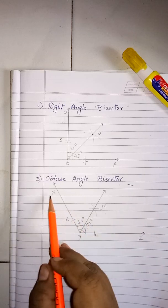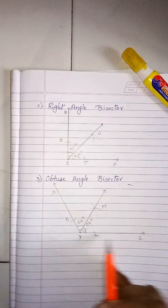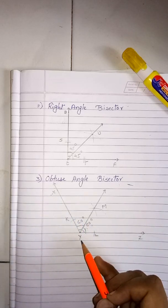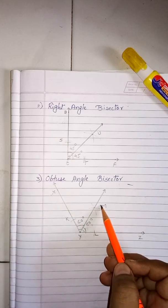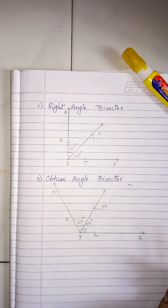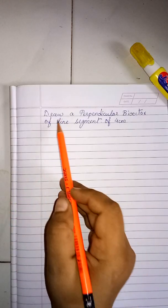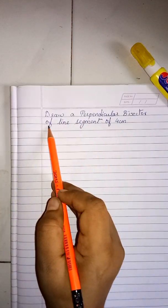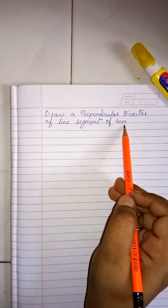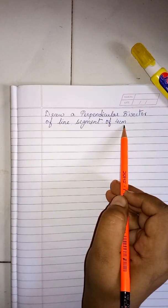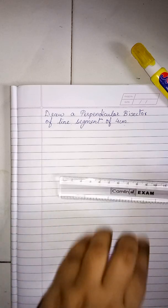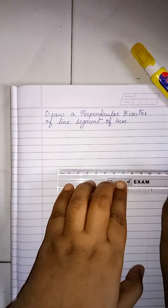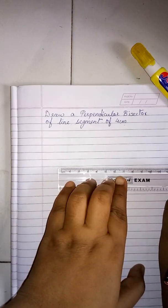The bisector of angle XYZ is ray YM. The next topic is to draw a perpendicular bisector of a line segment of 4 cm. First we will draw a line segment of 4 cm.